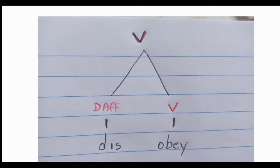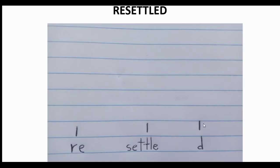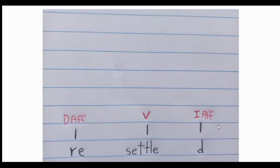The size of each morphological tree depends on how the word is divided. Let's see another example: the word 'resettled'. The first step is to divide the word into its morphemes — here we have the morpheme 're', the root 'settle', and the suffix '-ed'. So we have three morphemes. The second step is to label each morpheme: 're' is a derivational affix and 'settle' is a verb.